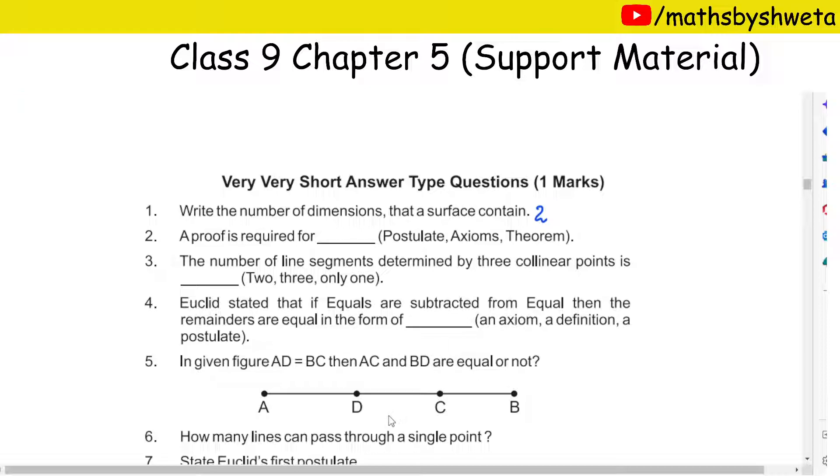Next question, what are you saying? I am filling the blank. Proof is required for... A proof is required for theorems. The postulates, we assume that it is true, but in actual there is no proof. Theorems.